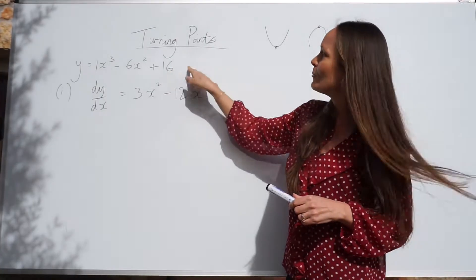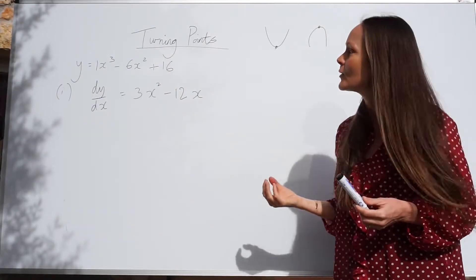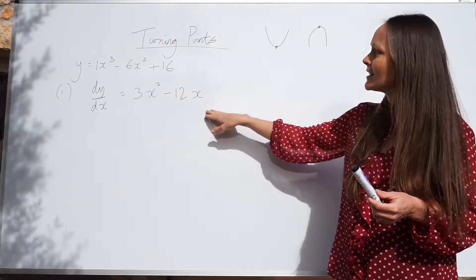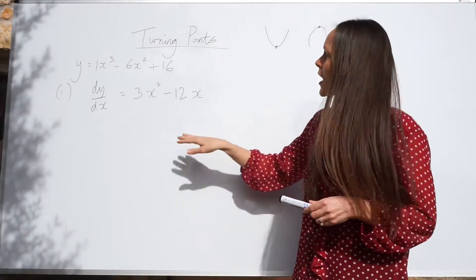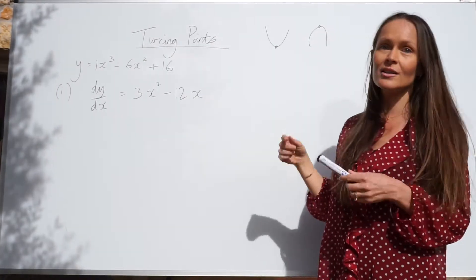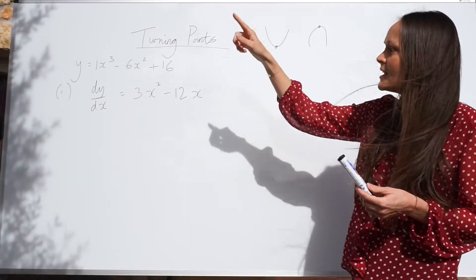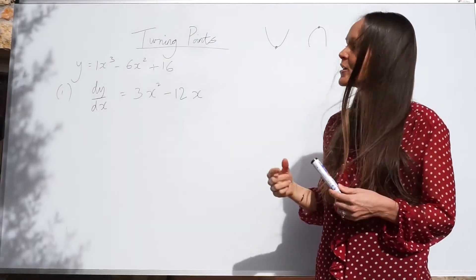When you differentiate a number like this, it just goes to 0. So we've already differentiated that equation. This is the expression for the gradient of the curve that I was talking about. Because the gradient is not fixed on a curve, it's always changing. So we've got an expression instead.